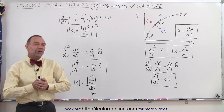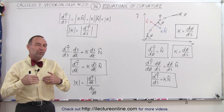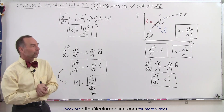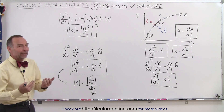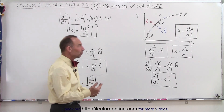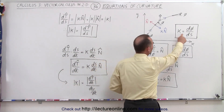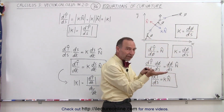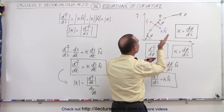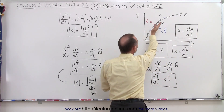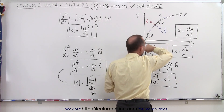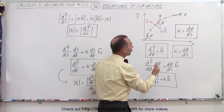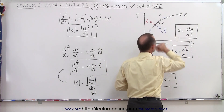Welcome to our lecture online. Let's talk about some additional equations we can utilize when we talk about the curvature of a curve. We're already familiar with this one — we've defined the curvature as the change in the angle phi, which is the angle between the positive x-axis and the direction of the unit tangent vectors along the curve, with respect to how far you travel along the curve.